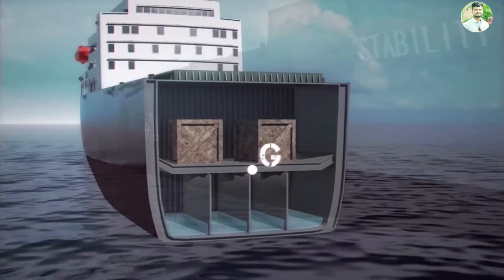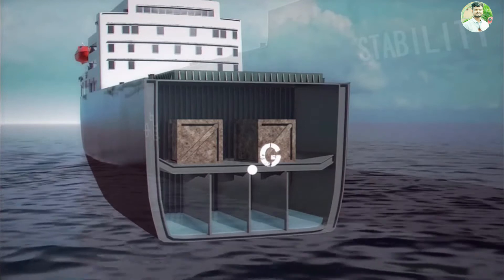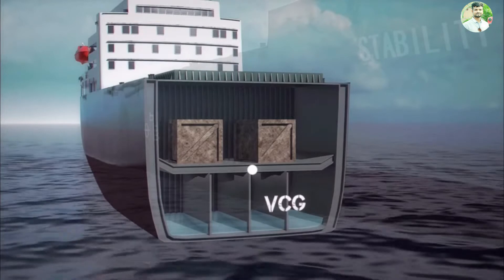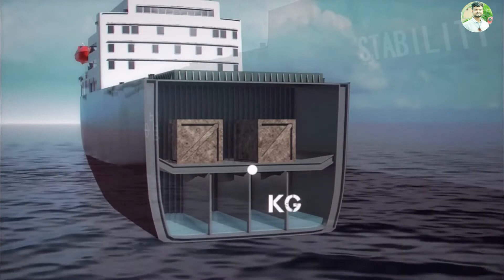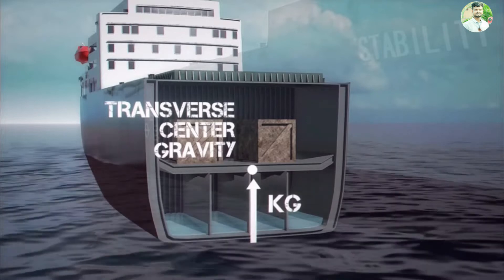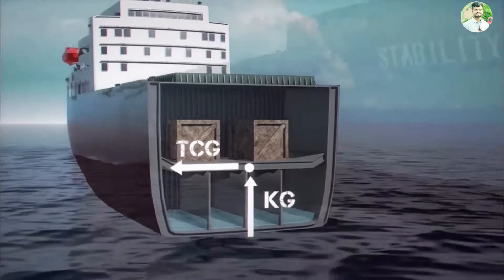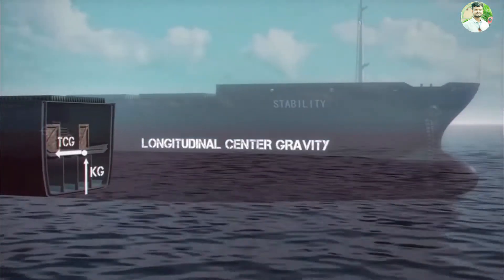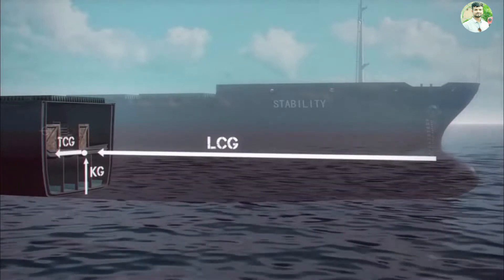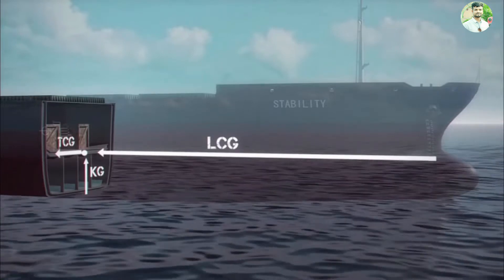Because G is a point in three-dimensional space, there are three coordinates used to define its position. The vertical center of gravity, VCG or KG, is measured from the keel. The transverse center of gravity, TCG, is measured from the centerline. The longitudinal center of gravity, LCG, is usually measured from the forward perpendicular or from midships.